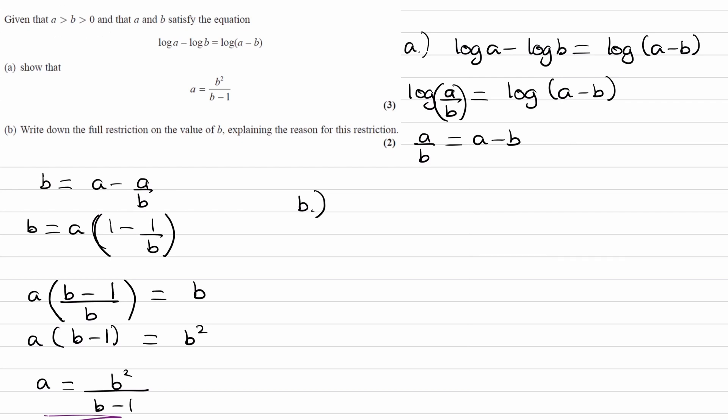So I think you want to think about the fact that, first of all, whenever you're doing logs of something, that something must be positive. So if you look at this equation, we then know that A must be positive, B must be positive, and also A minus B must be positive. So if you think about that, you then should be able to see why this must be true.